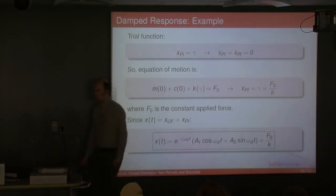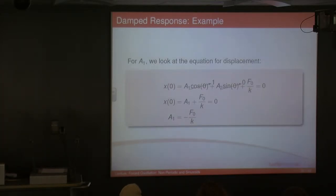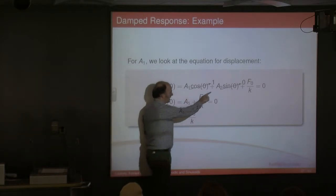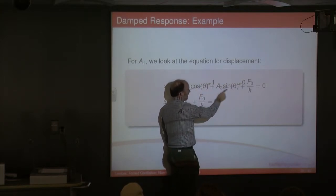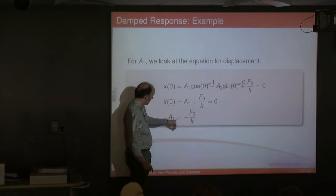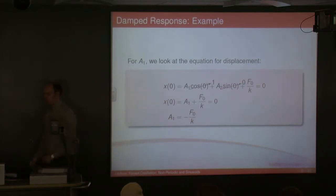That's quite straightforward. We apply our initial conditions: when displacement is zero, cosine of zero is one and sine of zero is zero. So we have A1 plus F₀/k equals zero, which gives us A1 = −F₀/k, as before.